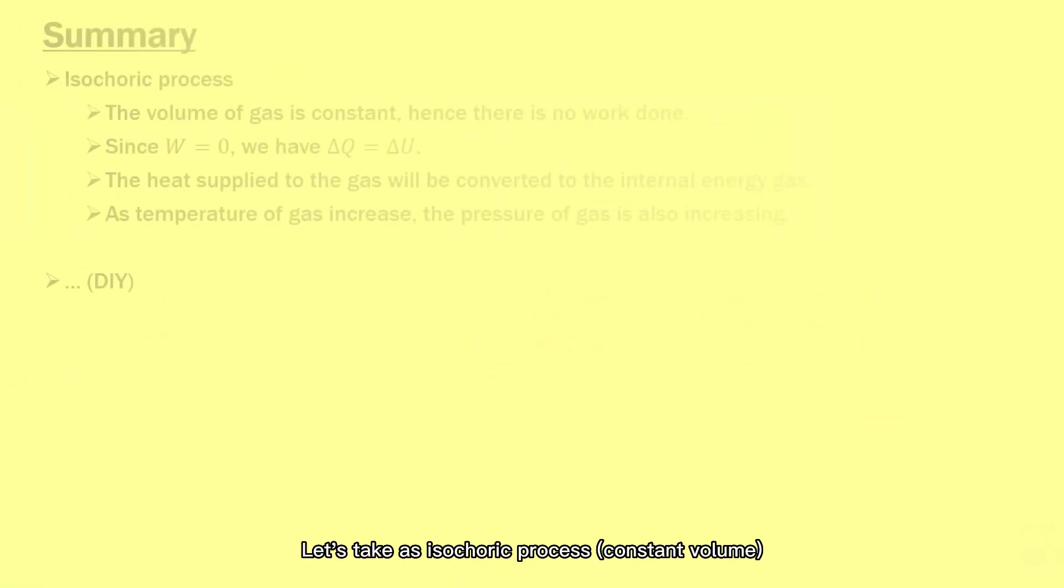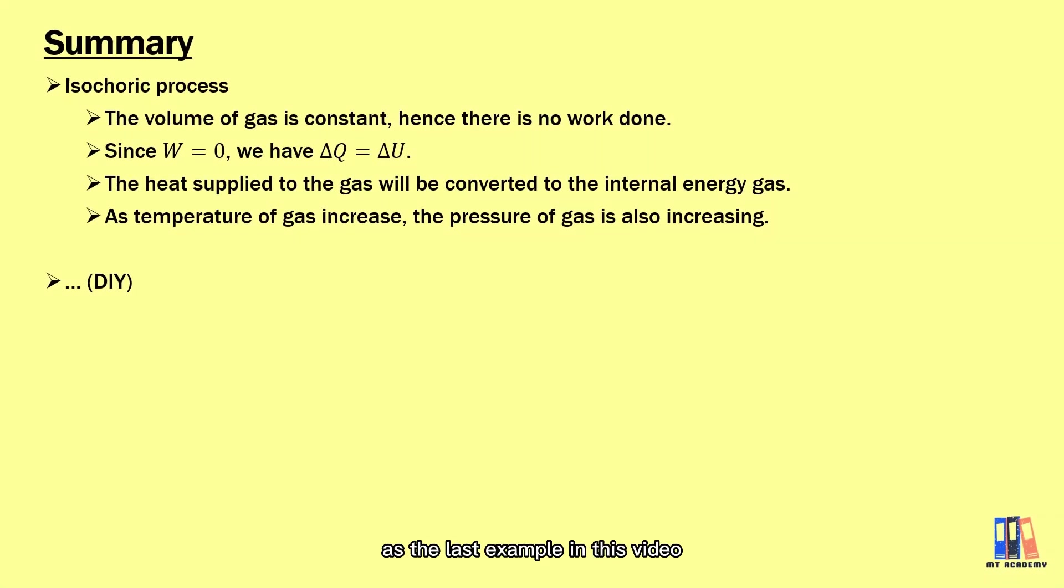Let's take the isochoric process as the last example in this video. The volume of gas is constant, so the work done is equal to zero. So the equation we have is delta Q equal to delta U. This means that the heat supply to the gas will be converted to the internal energy of gas. As the temperature of gas increases, the pressure of the gas is also increasing. The rest you can study on your own and try to explain in your own way.